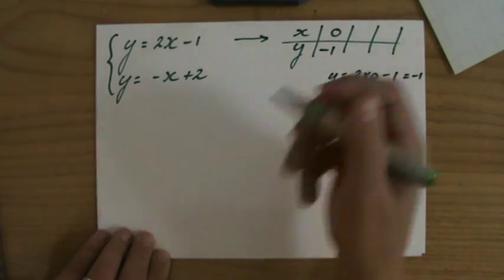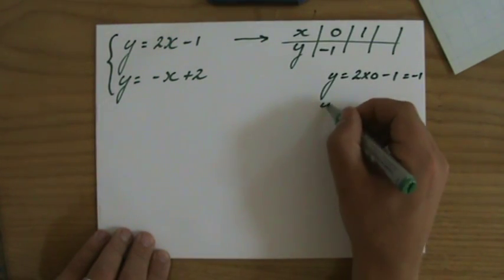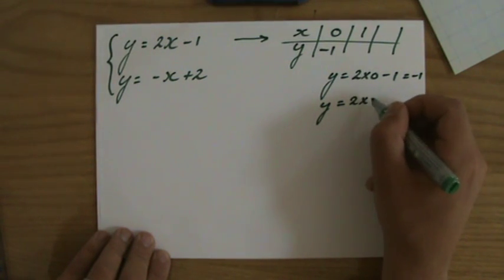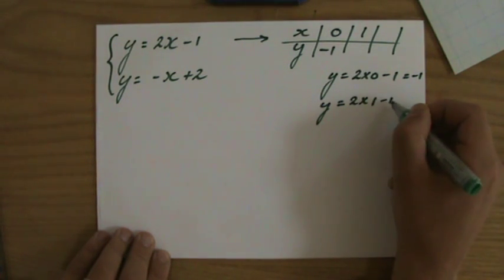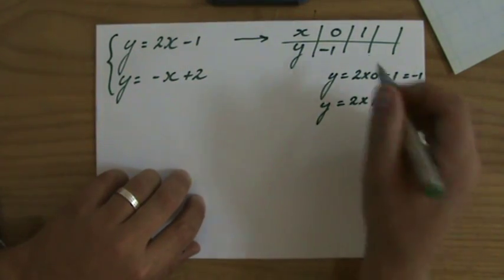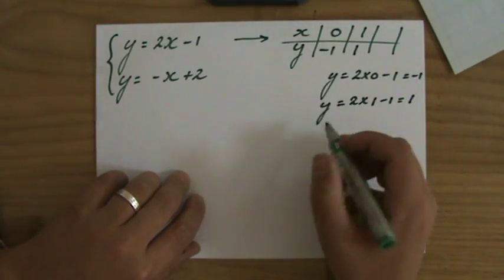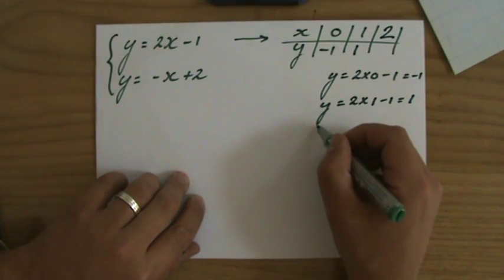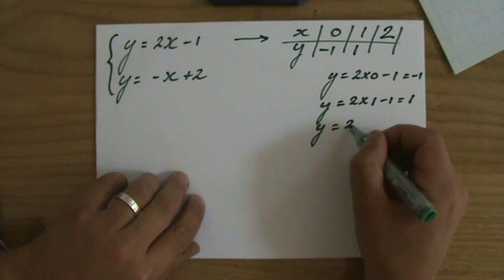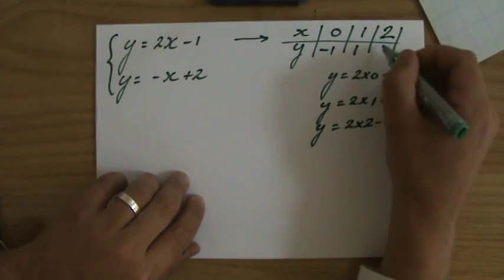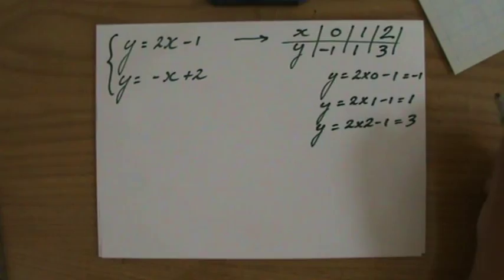So when X is 0, Y is minus 1. I'll take 1 for X. Y is going to be 2 times X, so 2 times 1 minus 1, and 2 times 1 is 2 minus 1 is 1. I've got my two points. Just to check my work, I'll take one more point, 2. When X is 2, Y is 2 times 2 minus 1, which is 4 minus 1, and that is 3.